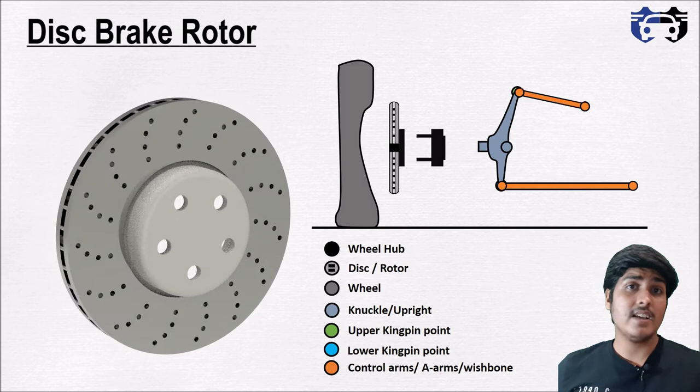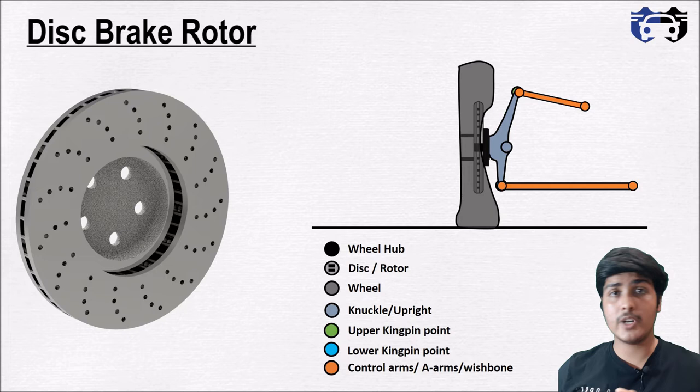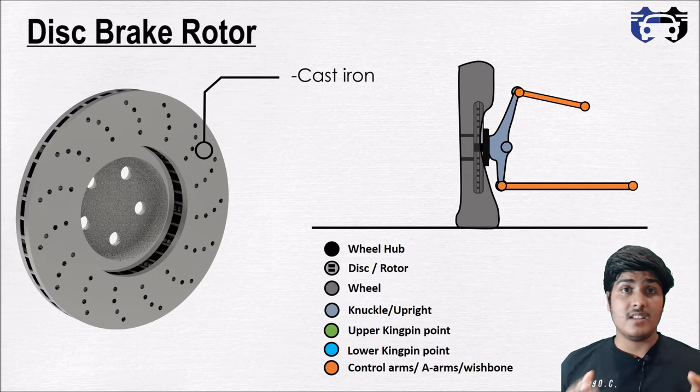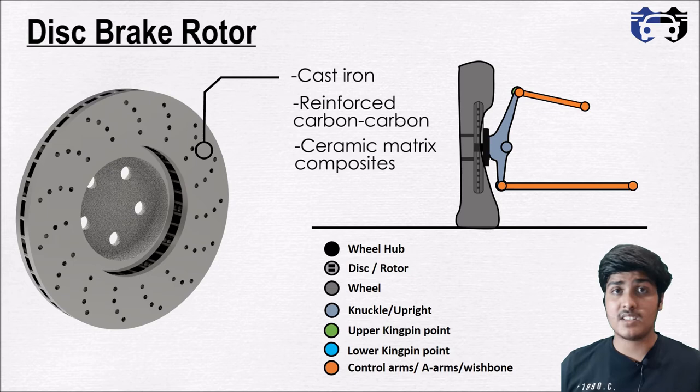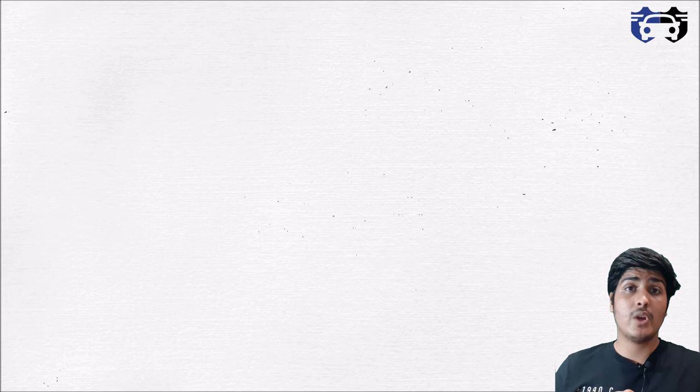The disc brake rotor is a circular shaped disc mounted to the wheel hub, which is connected to the wheel of the vehicle. The rotor is the component onto which the friction pads apply force, and due to friction it stops rotating. Since the rotor is connected to the wheel via the wheel hub, stopping the rotor stops the wheel. Disc brake rotors are generally made of cast iron, and in some cases composite materials such as reinforced carbon-carbon or ceramic matrix composites. A large amount of heat energy is produced at the disc rotor, which is dissipated using vent holes.